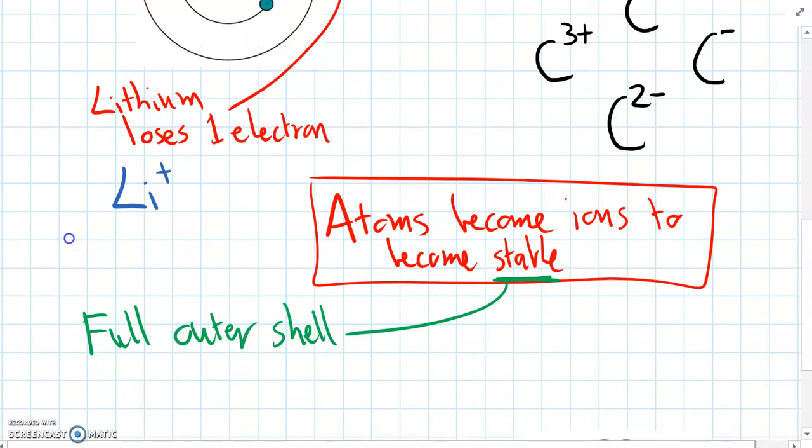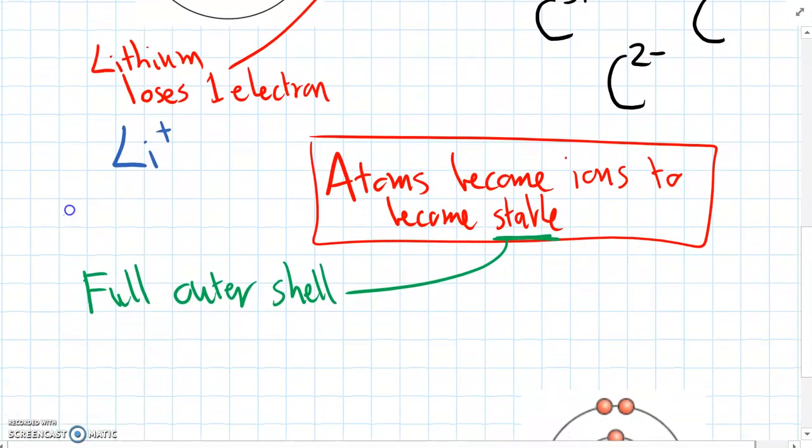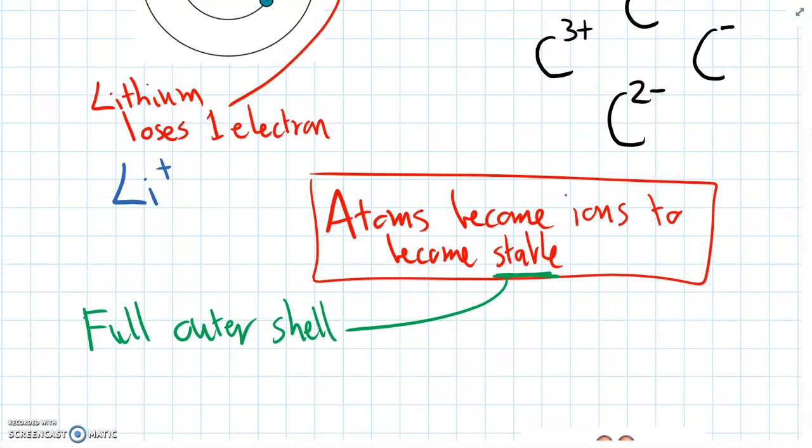So the outer shell is the shell furthest away from the nucleus. And remember that's where the highest energy electrons are. And we figured out that if that shell is holding its maximum number of electrons, then that atom is more stable and it won't react with anything else.